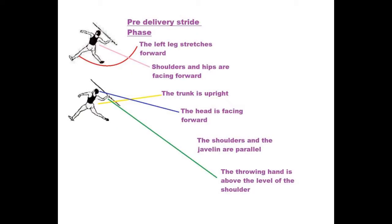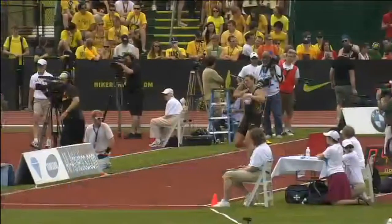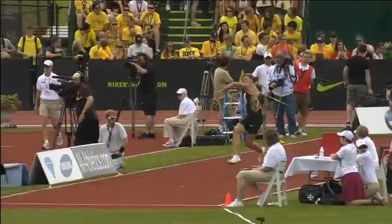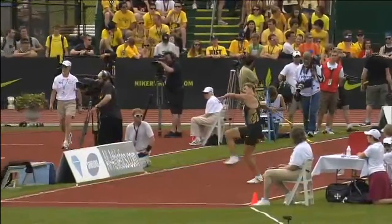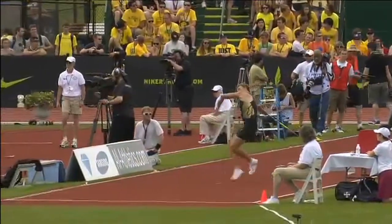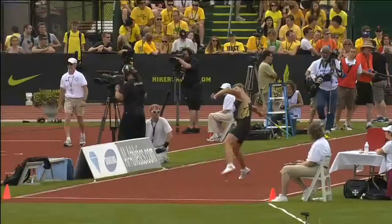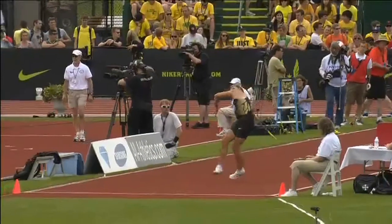Pre-delivery stride: the left leg stretches forward, the shoulders and hips are facing forward, the trunk is upright and the head is facing forward. The shoulders and the javelin are parallel.